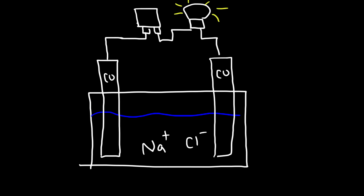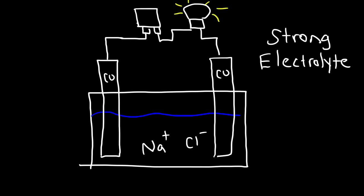Because a solution of sodium chloride conducts electricity, it is known as an electrolyte. Because it conducts electricity very well, it is a strong electrolyte. Any ionic compound that is soluble is a strong electrolyte — it ionizes completely, almost 100%. So for every 100 formula units of sodium chloride, you're going to have 100 sodium ions and 100 chloride ions. Strong acids are also strong electrolytes — they conduct electricity very well.